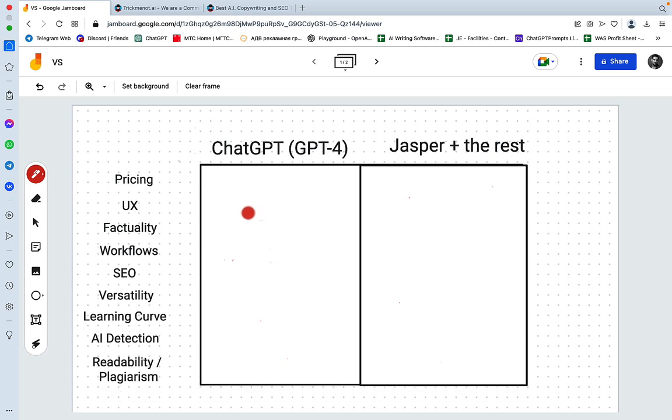Okay, first things first, the pricing, the elephant in the room. Jasper is one of the more expensive tools on the market. I'm not sure if it is the most expensive because you have outranking and whatnot. So I would give it 2 in terms of the price, and here the higher the score the worse the result. And for ChatGPT the pricing is I would say it's 5.